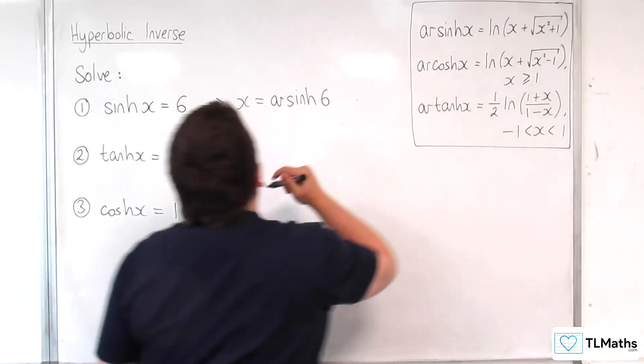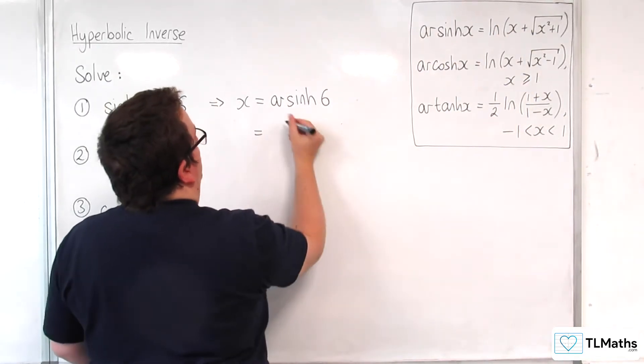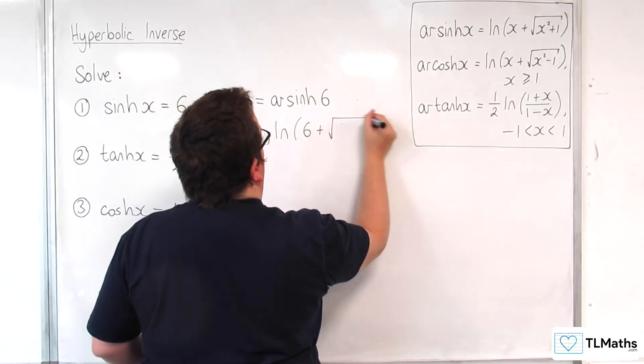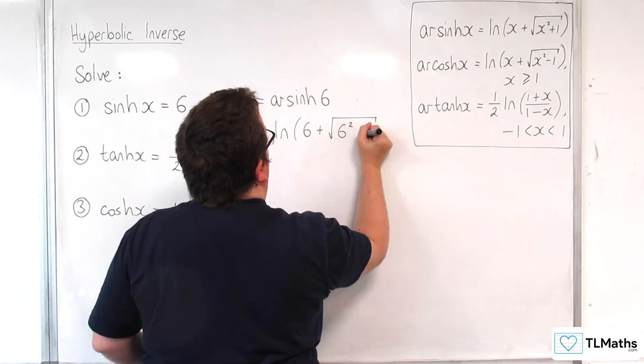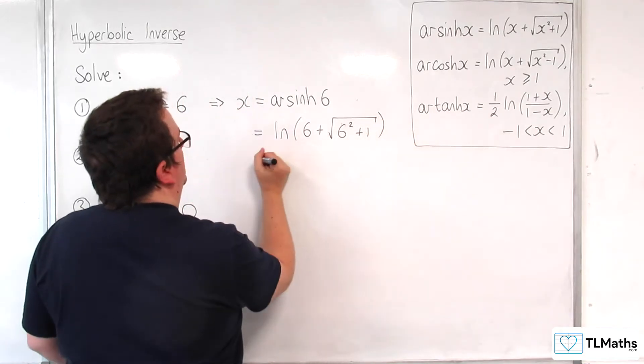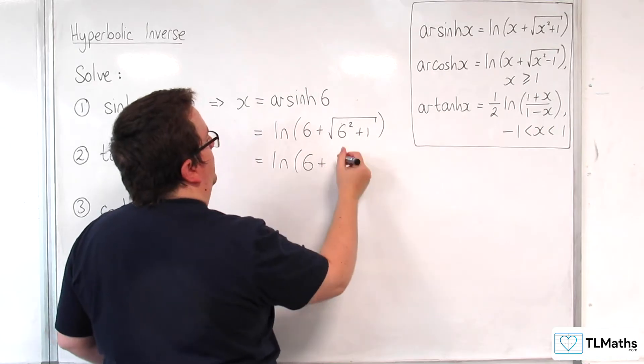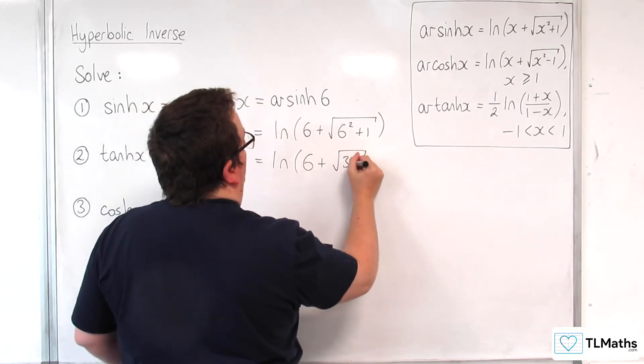I can go up here and say, well, that's equal to the natural log of 6 plus the square root of 6 squared plus 1. And so, that's the natural log of 6 plus the square root of 37.